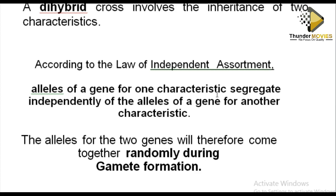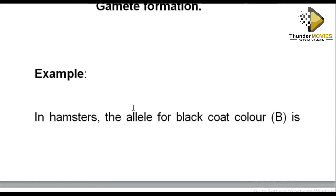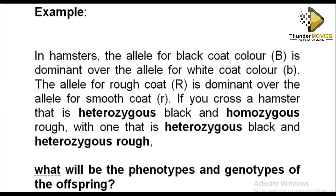When meiosis takes place, it must split each character independently without affecting the other character. The alleles for height must not influence the alleles of skin color, provided that these alleles are found on different chromosomes. This law applies when the alleles are located on different chromosomes.